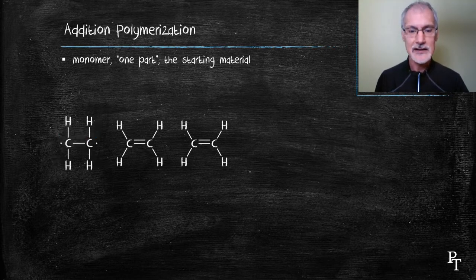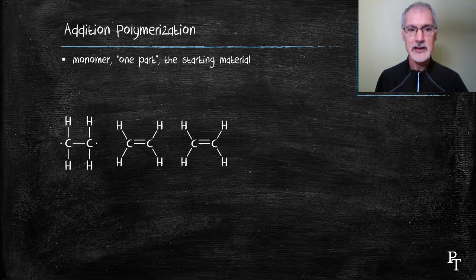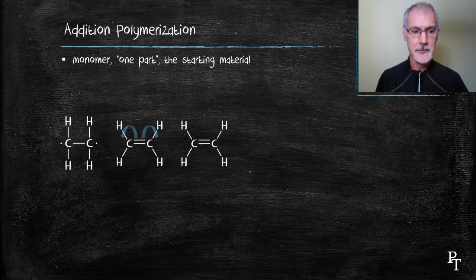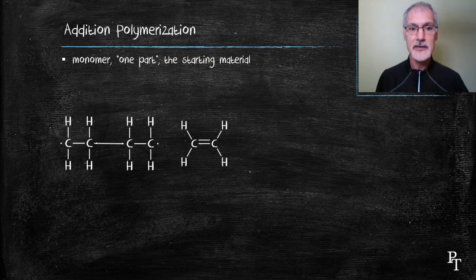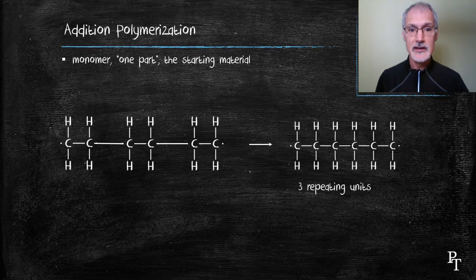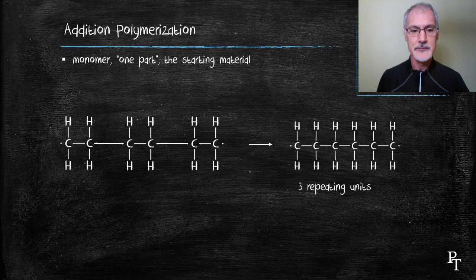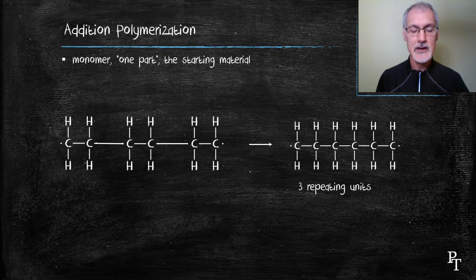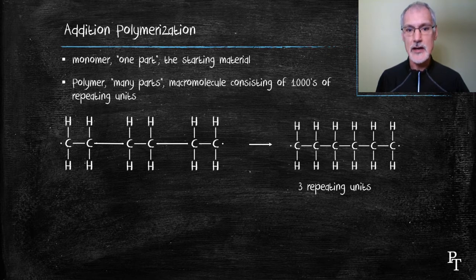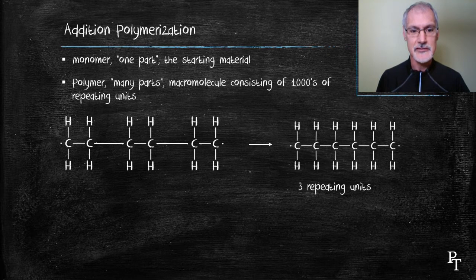Remember, radicals are highly reactive species. That free electron on the carbon can then induce a nearby molecule to also break apart. Those two can now join together to make a larger unit, and this process can repeat itself, breaking ethene molecule after ethene molecule apart and joining them. Here I show the product as three repeating units of that monomer.